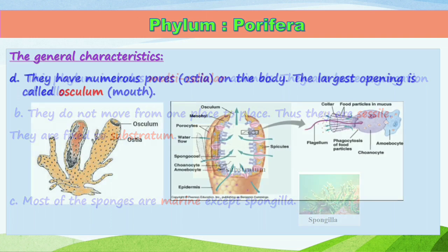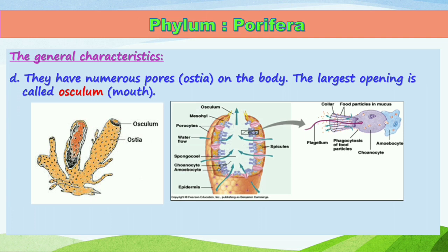Another characteristic of Phylum Porifera is that they are pore-bearing, which is why they are called sponges. They have small openings in their body called ostia. You can see in the diagram that ostia are on the lateral side of the body, and at the top there is also a large opening called the osculum. Water enters through the ostia into the body of the sponge.